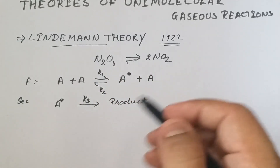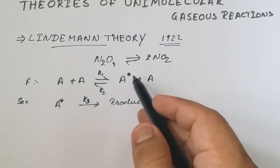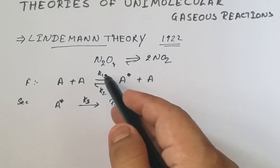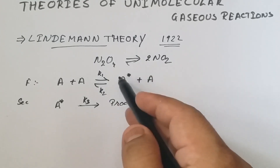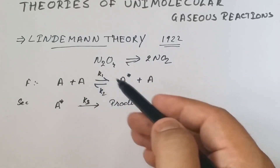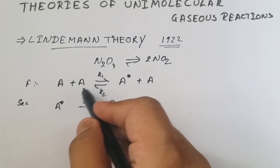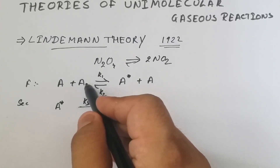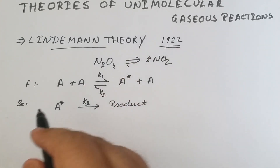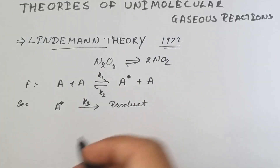In the first step, there is a collision between molecules and as a result there is formation of an activated molecule represented by A*, with velocity constant k₁. After formation of the activated complex, according to Lindemann, there is a time lag. During this time lag the activated molecule will either lose its energy and be converted back into the original molecule with velocity constant k₂, or it will decompose into product with velocity constant k₃.